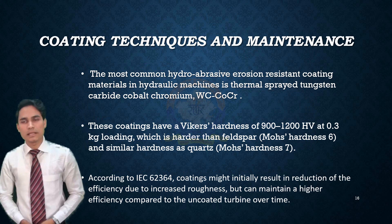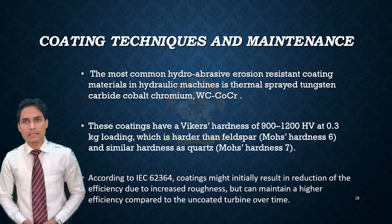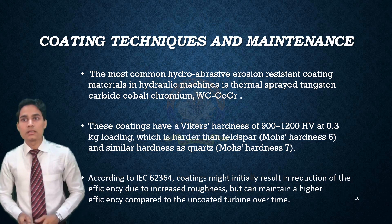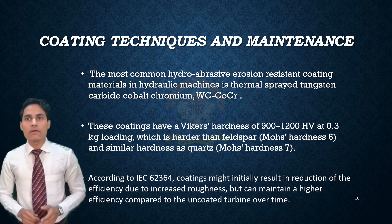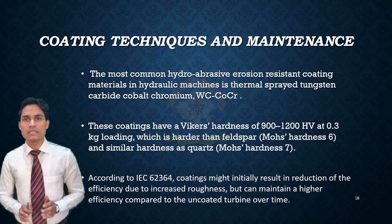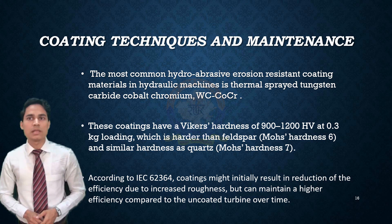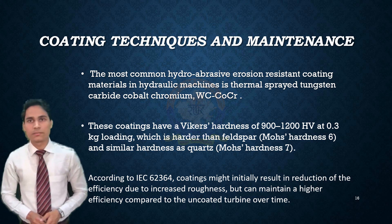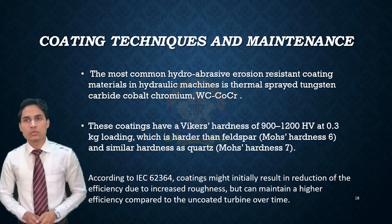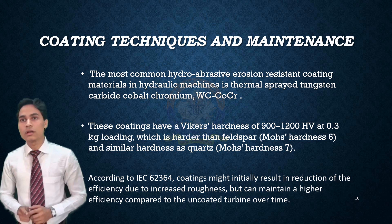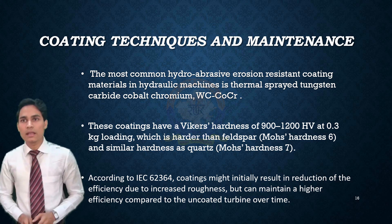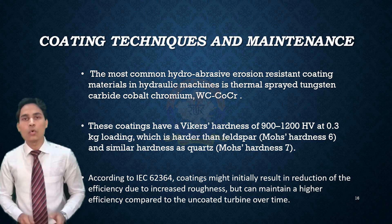This image shows the leakage flow and vortex core through the clearance gap. Coating techniques and maintenance. The most common hydro-abrasive erosion resistance coating material in hydraulic machines is the thermal spray tungsten carbide coating. These coatings have a Vickers hardness of 900–1200 HV at 0.3 kg loading, which is harder than feldspar and of similar hardness to quartz. According to IEC 6264, coating might initially result in a reduction of efficiency due to roughness, but can maintain higher efficiency compared to an uncoated turbine over time.